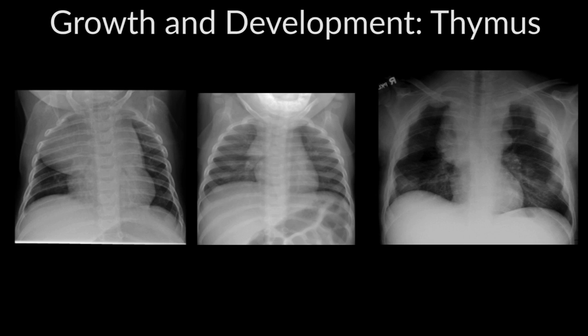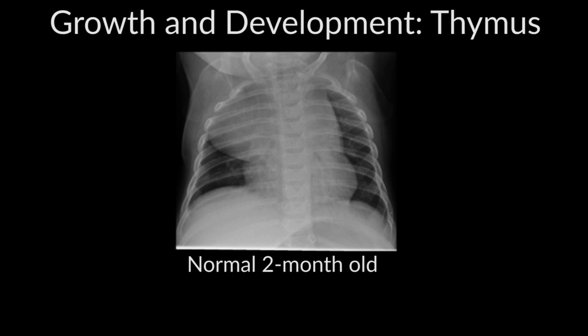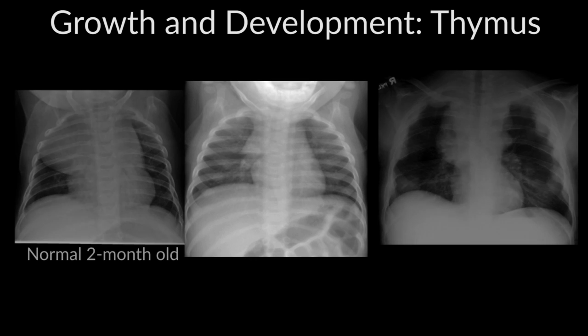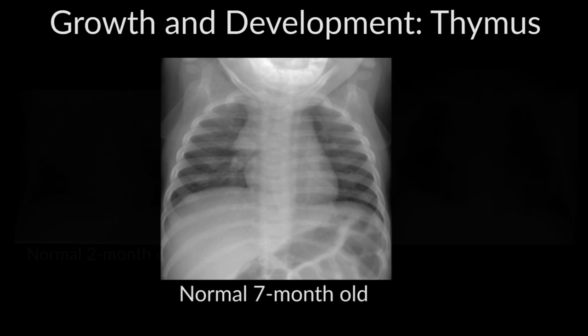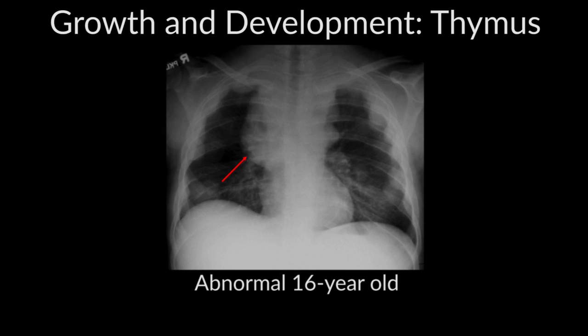Why are kids so different than adults? Besides the tremendous size differences that happen with maturation, there is also a tremendous change in the body of the child. Those developmental changes are reflected on the pediatric chest x-ray. For example, a normal two-month-old would have a relatively large thymus in proportion to the chest, taking almost half of the hemithorax and still be normal. By seven months of age, the thymus has become much smaller, and by 16 years of age, you can hardly see the normal thymus.